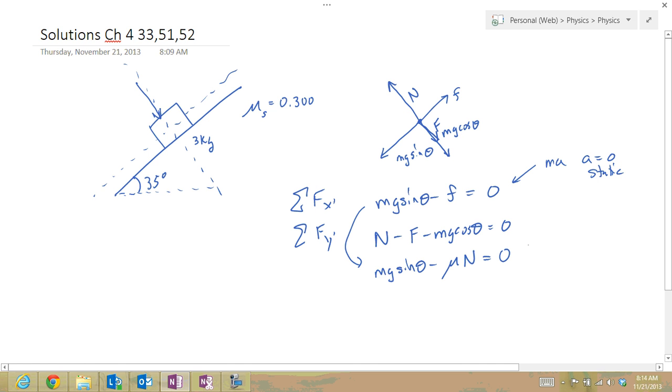Now I have these two equations. I'll solve this second one for n. n is equal to mg sine theta divided by mu. I got that by taking the mu n over to the other side of the equation and dividing through by mu.